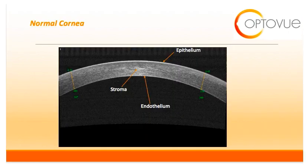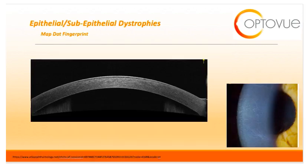This slide shows you what the normal cornea should look like on OCT. The most superficial surface is the epithelium, followed by the corneal stroma, with the most posterior feature being the corneal endothelium. The OCT can be extremely useful in identifying corneal dystrophies, as the OCT will delineate the layer of cornea involved.